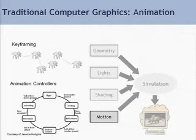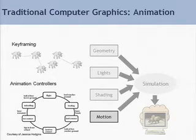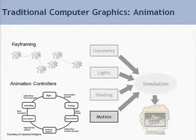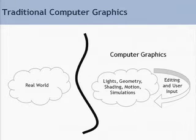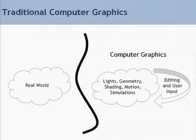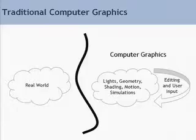For animation, we have typically used animators with manually specified keyframes. For articulated characters, we used manually designed joint controllers, which were used to reduce the work of the animator. When we used all these components together, along with sophisticated simulation models, we were able to achieve very compelling images and videos. Moreover, users were able to tweak all these different components — lights, shading, geometry, and motion — in order to produce desired images.